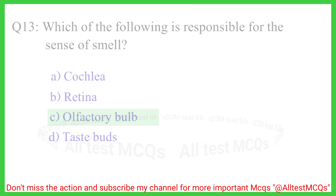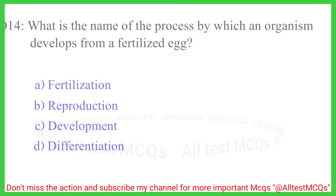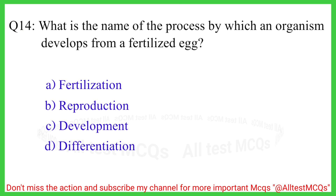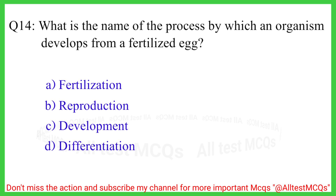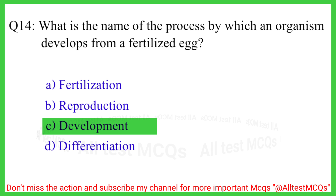Question number 14. What is the name of the process by which an organism develops from a fertilized egg? The correct answer is option C, development.